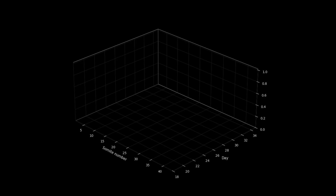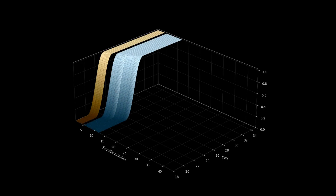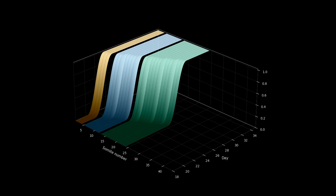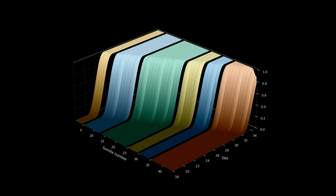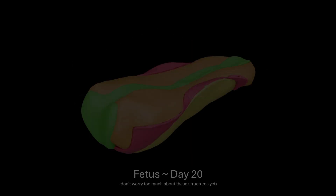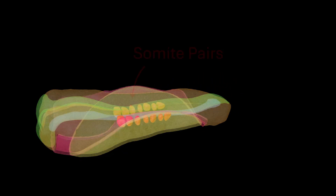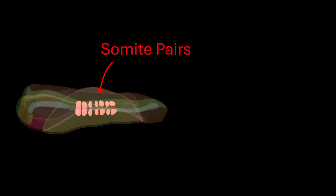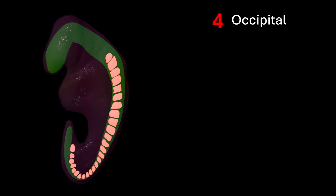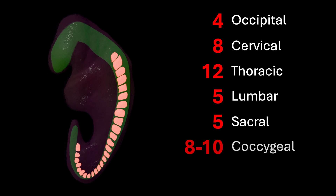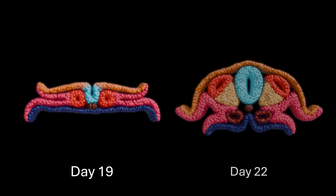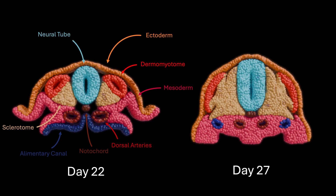Somites don't all appear at the same time — some are already differentiating while others are just starting to form. That means there isn't a single stage where we can picture all of them at once. By the end of week three, the very first somite pairs show up in the neck region, and over the next week, new pairs form one after another in a precise sequence down the length of the body. There are four occipital, eight cervical, twelve thoracic, five lumbar, five sacral, and eight to ten coccygeal somites. Somites aren't just structural blocks — they're segmental guides. They mark out the body plan and direct spinal nerves to their future targets.